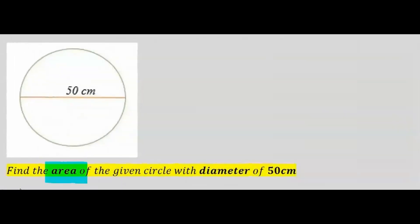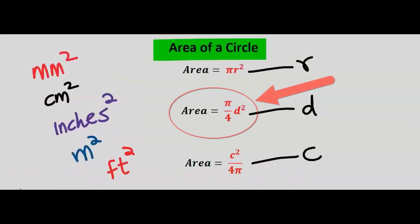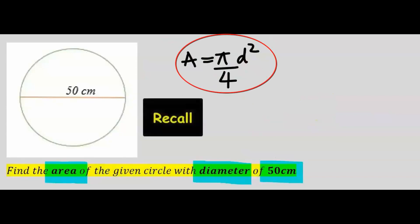Let's find the area of the given circle with diameter of 50 centimeters. For the area of a circle with a given diameter, the formula is π divided by 4 multiplied by the diameter squared. The area: π over 4 multiplied by the diameter squared.